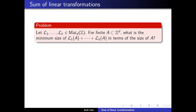Let's extend the problem to linear transformations instead. Now you have k linear transformations in d dimensions, and you have a finite set in Z^d. What is the minimum size of this sum of linear transformations?